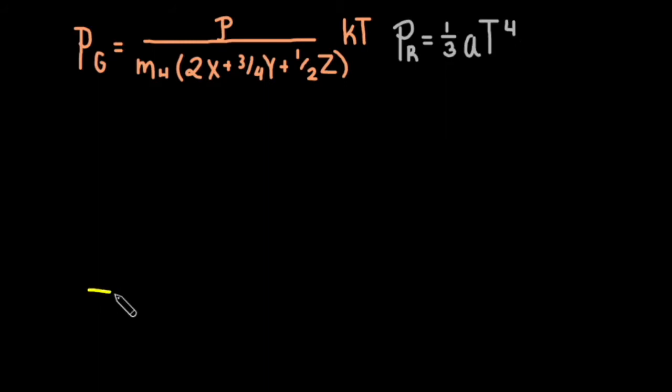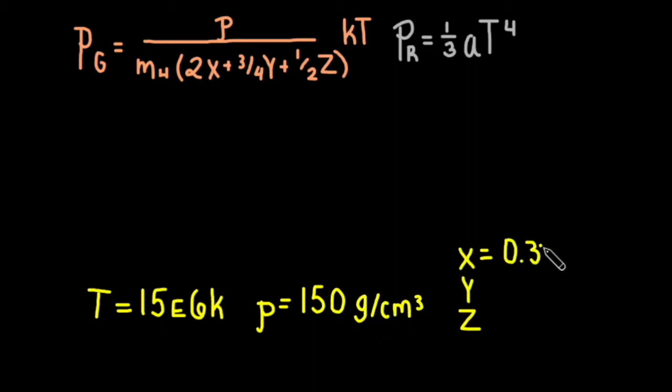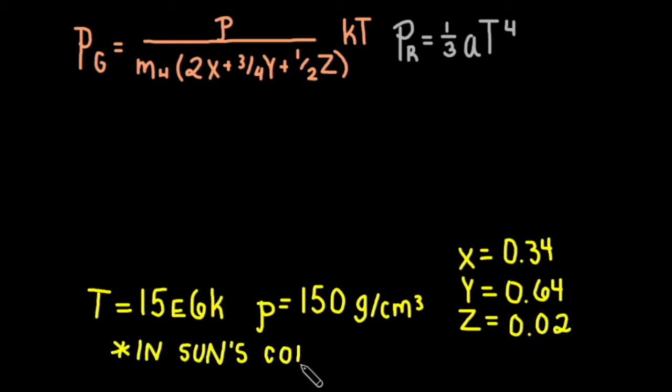We can calculate the gas and radiation pressure at the sun's core by plugging in known values. The sun has a core temperature of 15 million Kelvin and density of 160 grams per centimeters cubed. Its composition is 34% hydrogen, 64% helium, and 2% metal. Note, this composition is specific to the sun's core and does not match its surface composition.